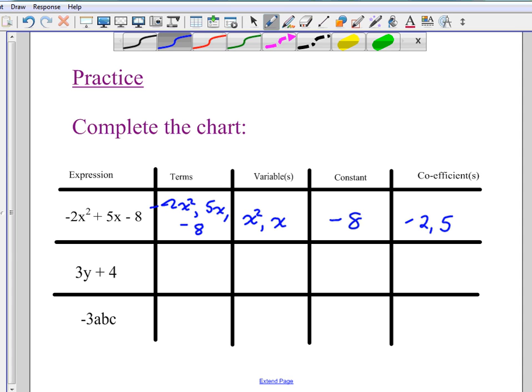The next one, there are two terms, 3y and 4. The variable is y. The constant is 4. And the coefficient is 3.